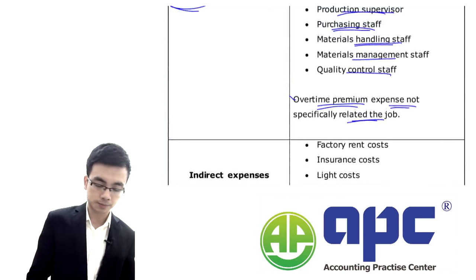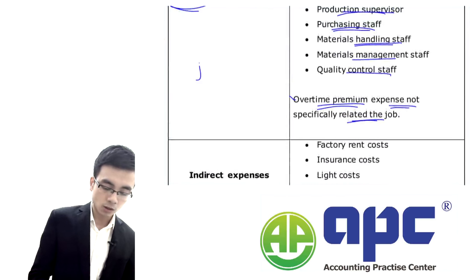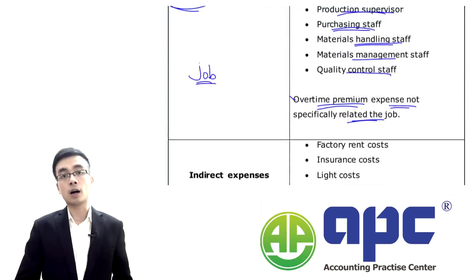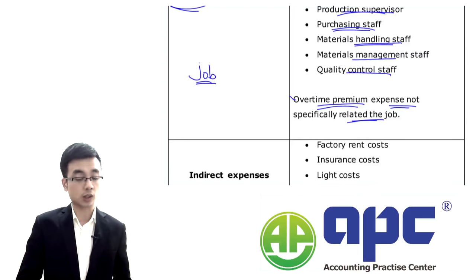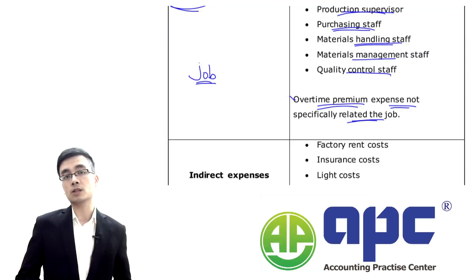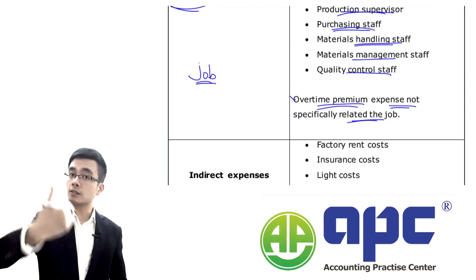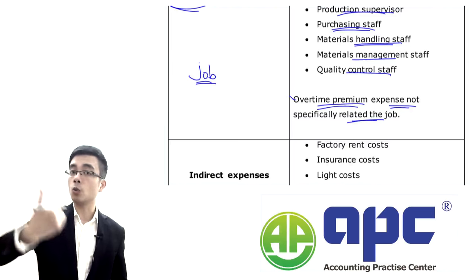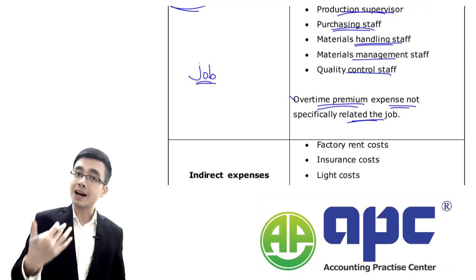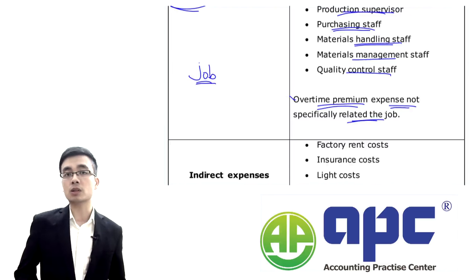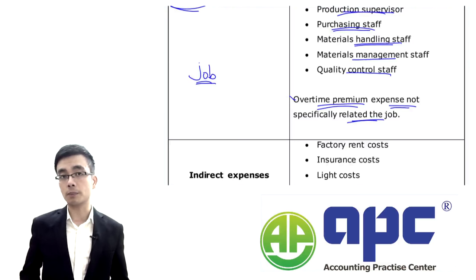If the customer requires you to work overtime, then the overtime premium paid to workers would be directly related to that specific job. However, if the customer does not require overtime and your workers simply work late — for example, because there is a lack of sales orders in the morning — then the overtime is not related to one particular job.